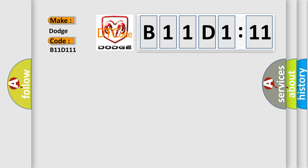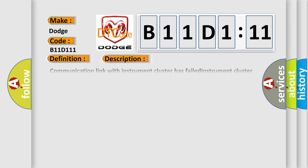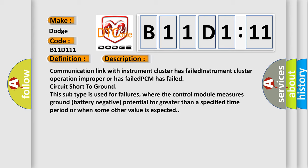Dodge car manufacturer. The basic definition is no cluster bus message. Communication link with instrument cluster has failed, instrument cluster operation improper or has failed, PCM has failed, circuit short to ground. This subtype is used for failures where the control module measures ground battery negative potential for greater than a specified time period or when some other value is expected.